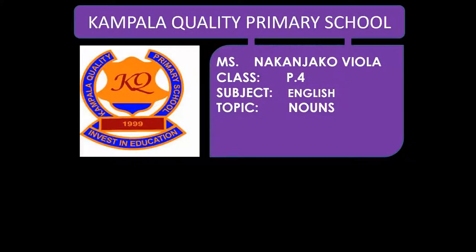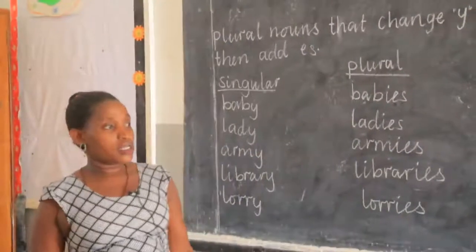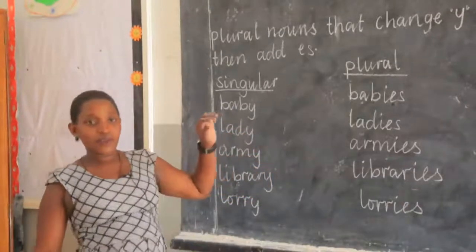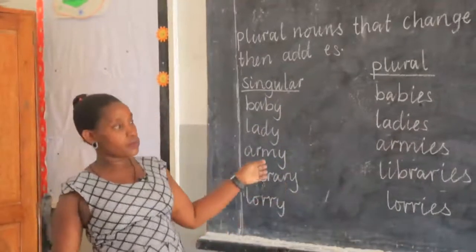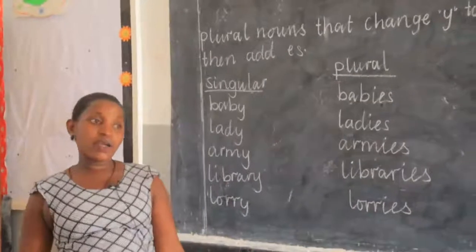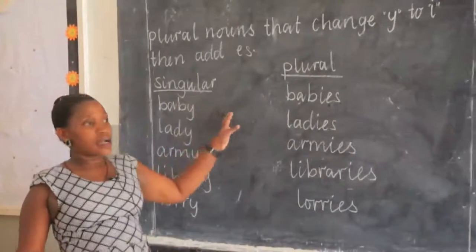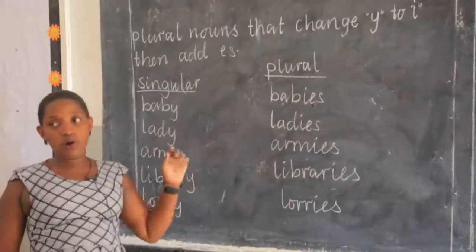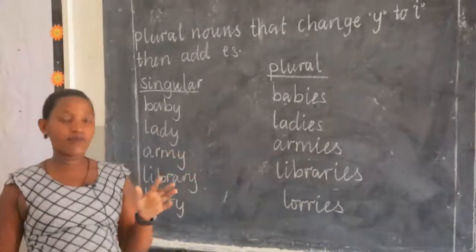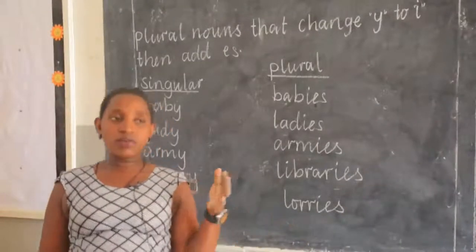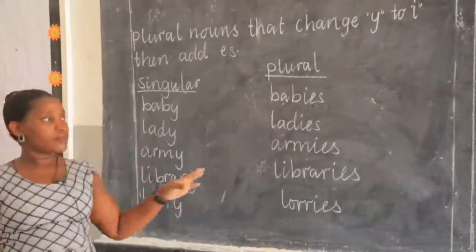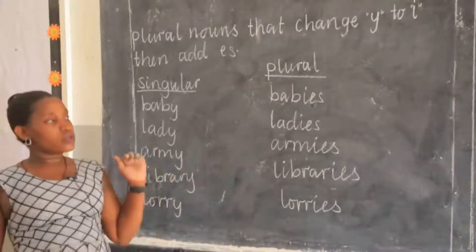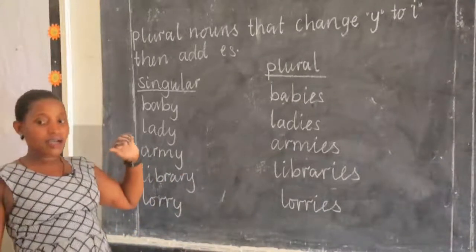Welcome back my learners. Hope everyone is fine. I think you know where we stopped — looking at plurals. We are still looking at plurals. Remember we said we have very many plurals, and plurals are under common nouns, or countable common nouns. I told you all these nouns have plurals. But how do they change? Last time we looked at those ones where we add S, and those ones where we add ES. So today we are coming to another category.